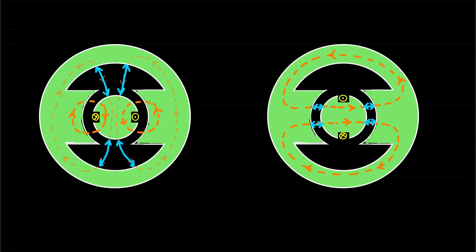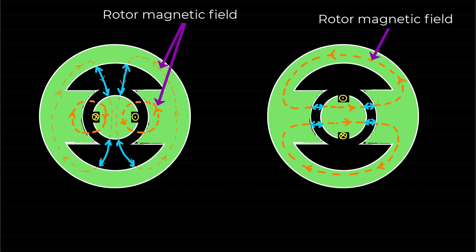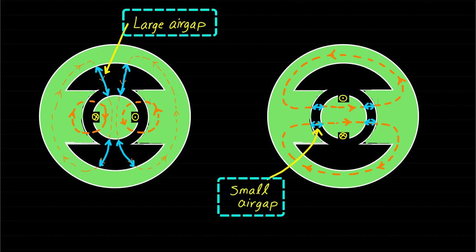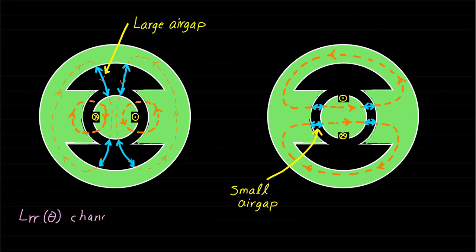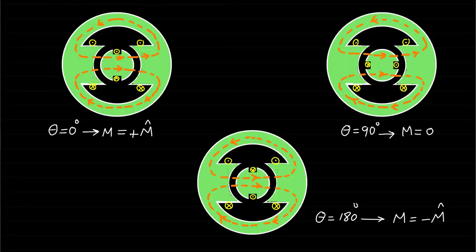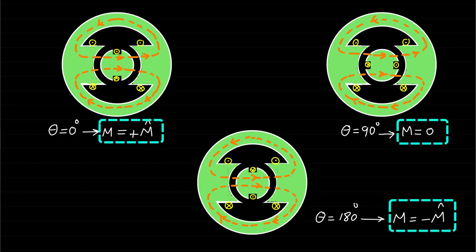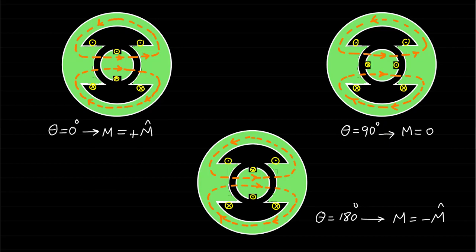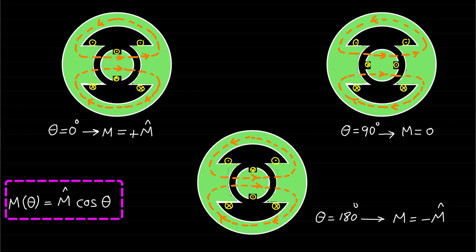Now let's see if the rotor self-inductance changes with rotor position. These figures show the rotor magnetic field distribution at different rotor positions. The air gap seen by the rotor magnetic field changes with respect to rotor position, meaning the rotor magnetic field distribution is different at different rotor positions. That is why the rotor self-inductance LRR changes with rotor position. The mutual inductance M also has different values at different rotor positions and can be represented as M of theta equals M-hat cosine theta.